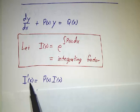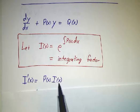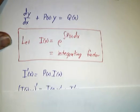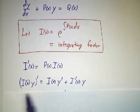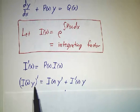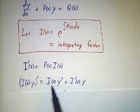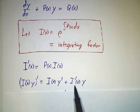So the derivative of i is p times i. And that means that if you take the derivative of i times y by the product rule, that's i times y' plus i' times y.